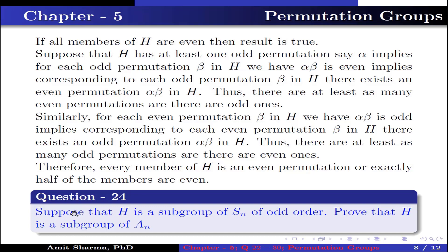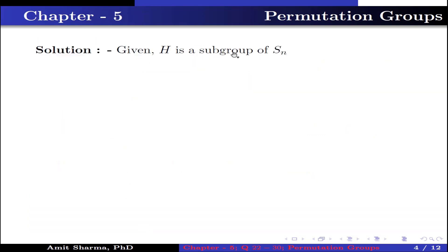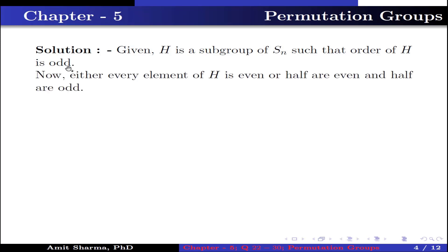Question number 24. Suppose that H is a subgroup of SN of odd order; prove that H is a subgroup of AN. Given H is a subgroup of SN such that the order of H is odd. Now, either every element of H is even or half are even and half are odd. For more details, see question number 23.